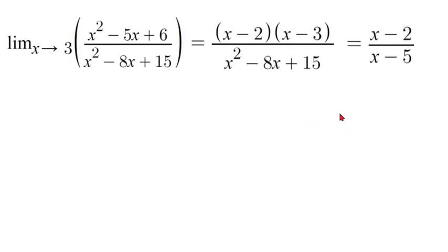So we have x minus 2 over x minus 5. Our simplified limit as x approaches 3 is x minus 2 over x minus 5.